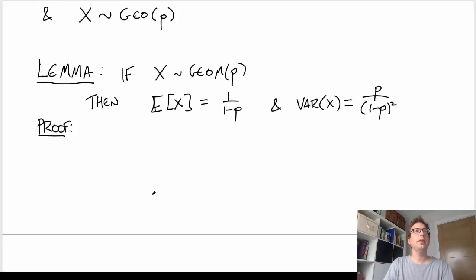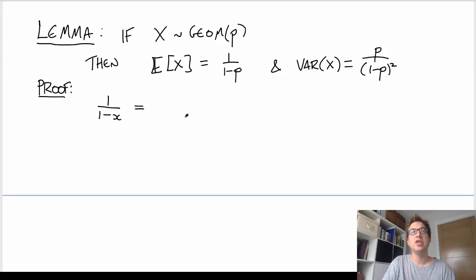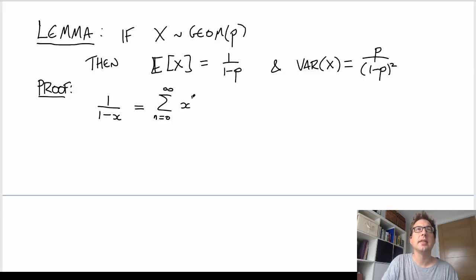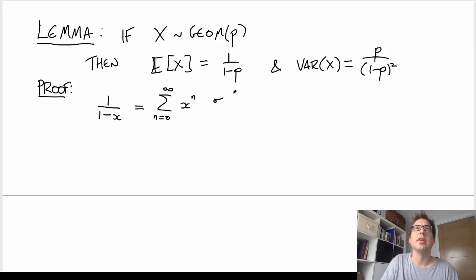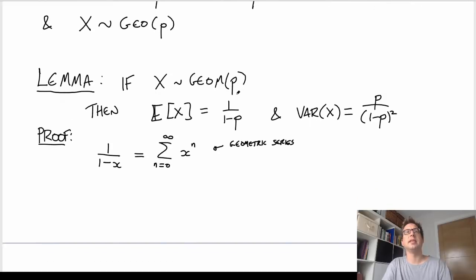Let's consider the following: we know that 1 divided by (1 minus X) is a geometric sequence — that is, I can sum from N equals 0 to infinity of X to the N, and it's equal to this. That's the standard result about geometric series. This is true for any X which is less than or equal to 1 in absolute value, which is going to be fine in our case because we're considering P here, a probability less than or equal to 1.